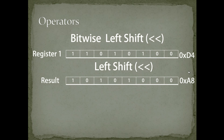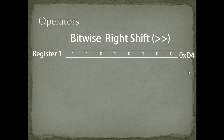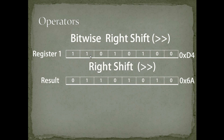The left shift operator moves data from LSB toward MSB. Similarly, the right shift operator moves bits from MSB toward LSB. With 0xD4 in register 1, right-shifting by 1 moves each bit one position to the right; the bit at position 0 is discarded and position 7 is filled with 0. The result of the right shift by 1 is 0x6A.